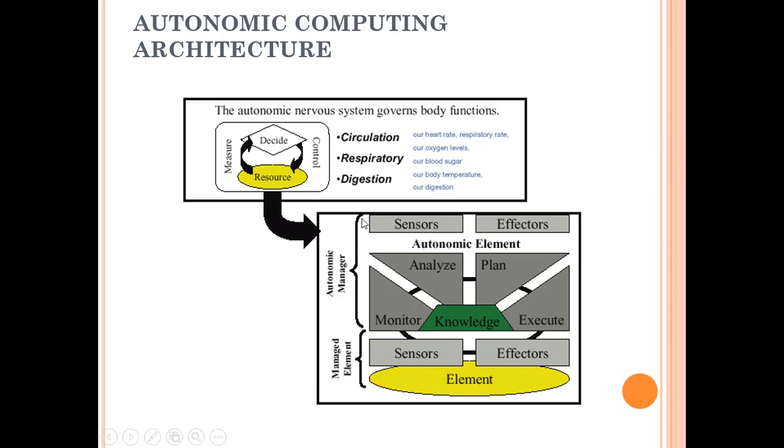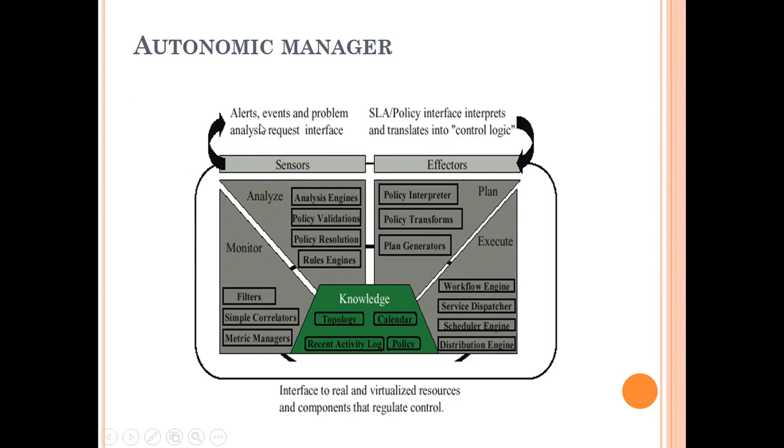The autonomic manager is this part, and the managed element is this part. This element is actually managed by this whole autonomic manager. We have sensors and effectors. Sensors provide alerts, events, problem analysis—this is the request interface. Effectors have the policy interface that interprets and translates into the control logic. Alerts and events are all done by sensors and effectors.